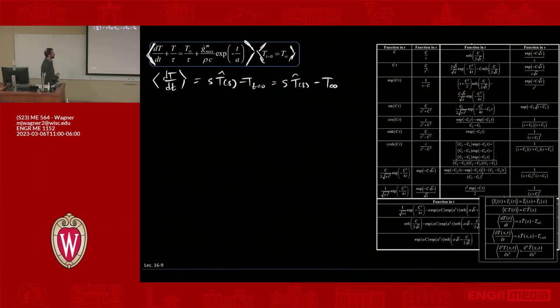T infinity is my initial condition. For these zero-D problems—I'll say it again—for the zero-D problems, you are applying the boundary condition or the initial condition as part of the process of taking the Laplace transform. If you find yourself in Laplace with an initial condition still floating around that you haven't evaluated, you have a problem. You should evaluate it as you're going into the Laplace domain, and then when it comes back out, it's baked into your equations.